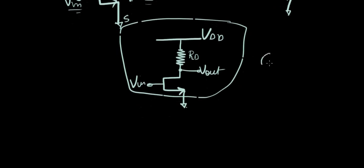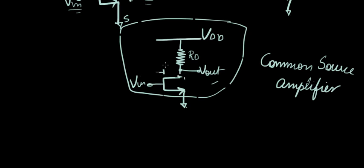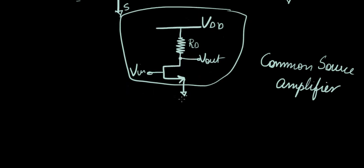And this is called a common source amplifier. Why is it called a common source amplifier? Because here's your source. And this is your Vin. And this is your Vout. So Vin and Vout have a common ground source. So that's why it's called a common source amplifier.